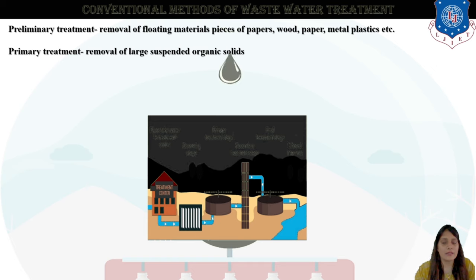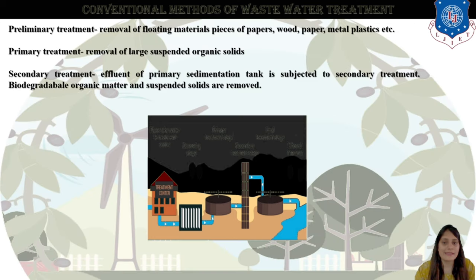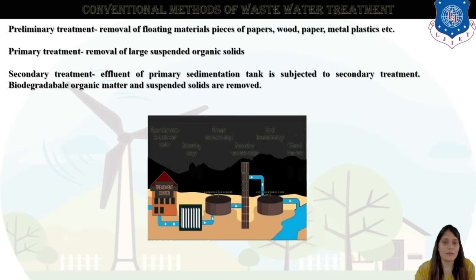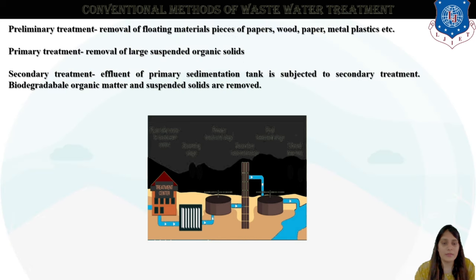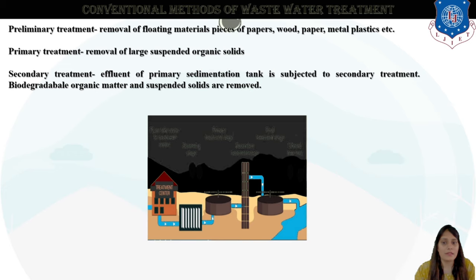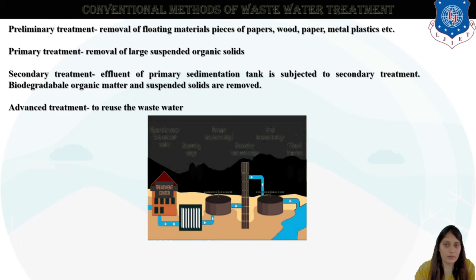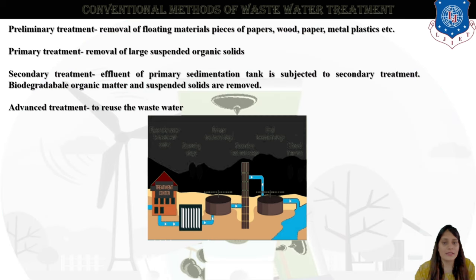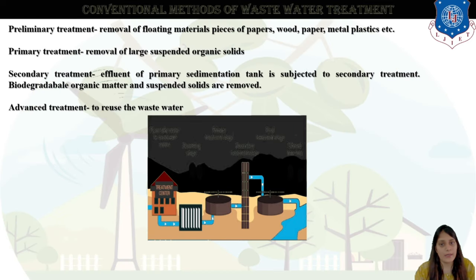In primary treatment, there is removal of large suspended organic solids. In secondary treatment, the primary sedimentation tank is subjected to further processing — biodegradable organic matter and suspended solids are removed. Then there is the advanced treatment to reuse the wastewater. So you can see the stages are: preliminary, primary, secondary, and advanced treatment.